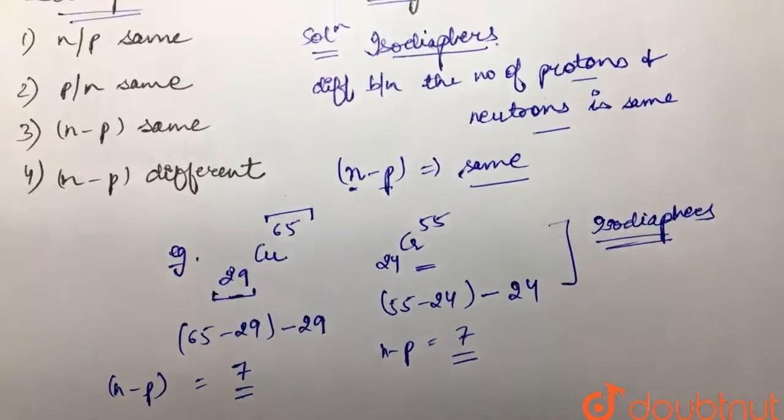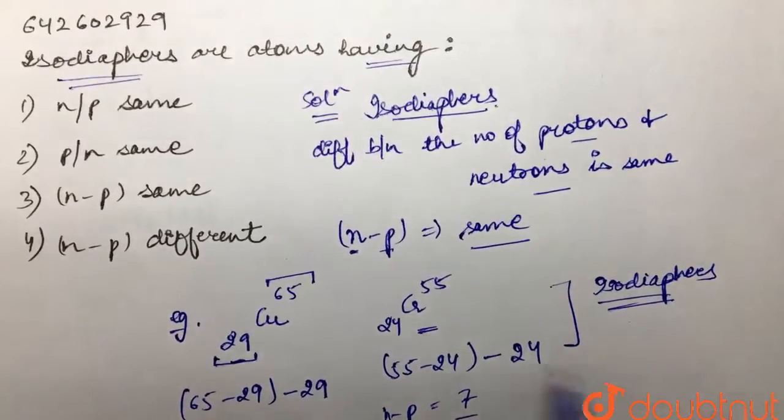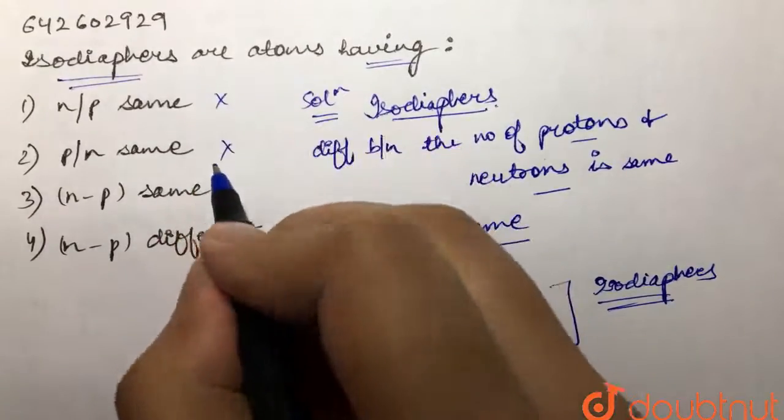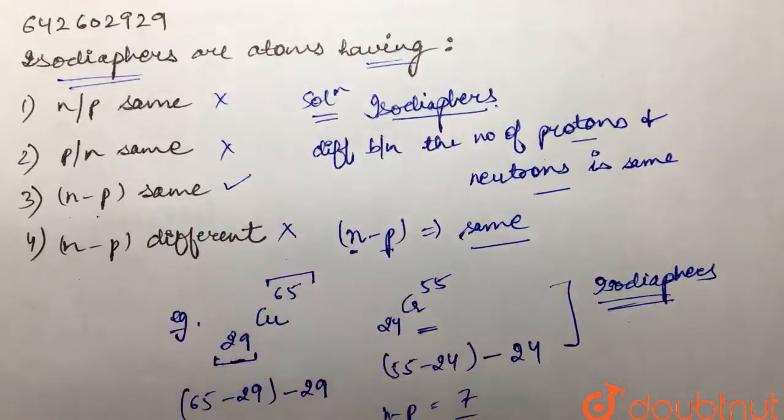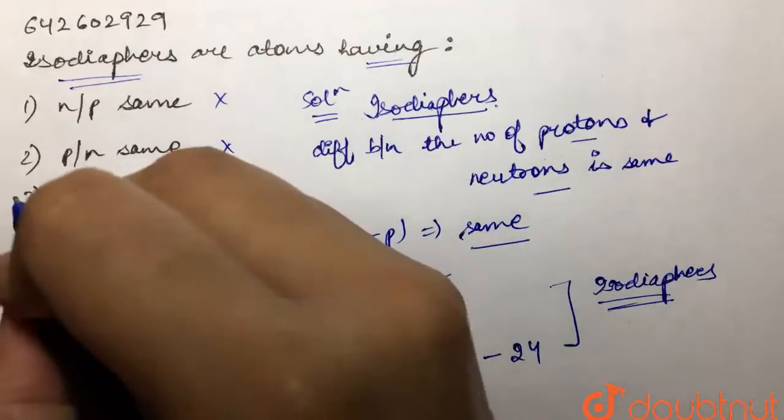So if we look at our options: n by p is same - this is not correct. p by n is same - no. n minus p value is same - this is correct. n minus p is different - that is not correct. So isodiaphors are the ones in which n minus p value is same. So our answer is third.